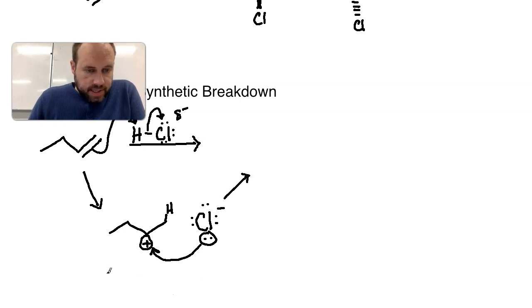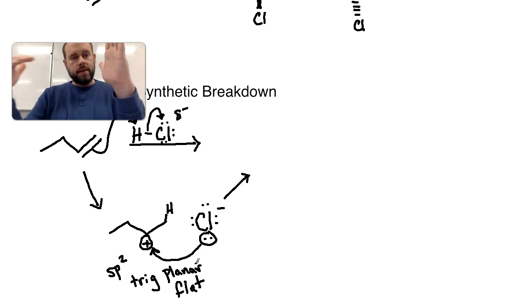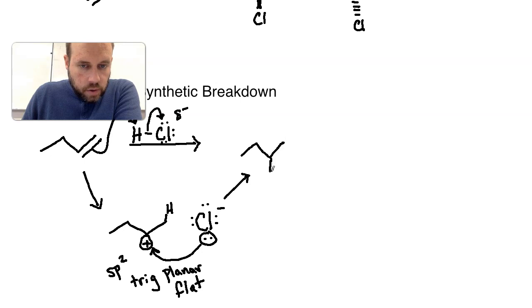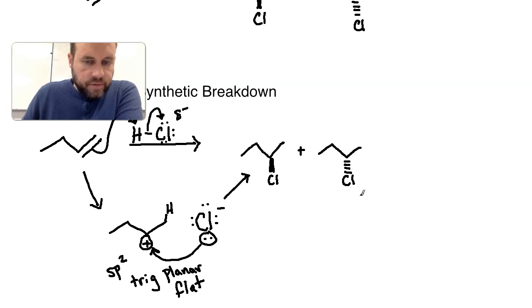Again, I want to mention this carbocation here is sp2 hybridized, which as a result means that it's going to be trigonal planar. Anything that's trigonal planar is flat. So when you have a flat attack site, you can have the chlorine coming in from both directions. It could attack from the front or the back, and when that's the case, you can get a mixture. If you are going to have a chiral center in your product, you would get a mixture of the chlorine attacking from the front position and you could also get the chlorine attacking from the back position. So it's really a 50-50 mixture.